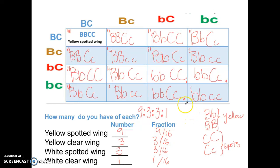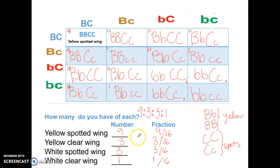Make sure that you remember these steps. First, figure out what two traits you are talking about. Second, make sure you do your FOIL method. Third, make sure that you fill in the boxes correctly. And fourth, you can answer the questions asked. I hope that you found this information helpful, and I will see you on the next video. See you later.